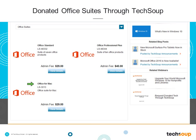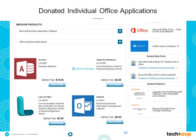If you need more than 50 licenses, going with Office 365 options may be the best way to get access to donated and discounted Office suites beyond the 50. Individual application admin fees are listed on our site as well. For example, if you just need access to Outlook, you're looking at a $6 admin fee per license. So that's all available on our website.